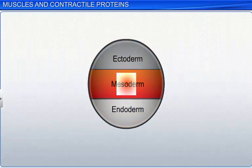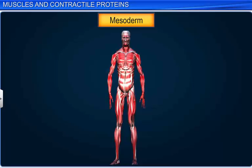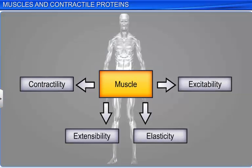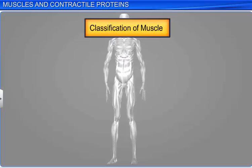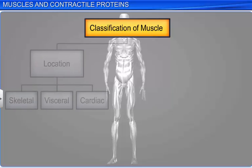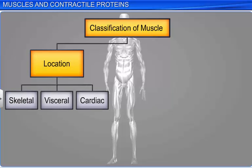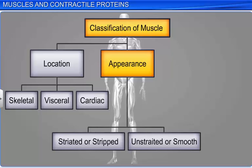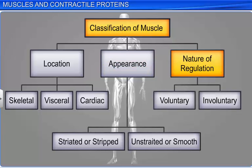Muscle is a specialized tissue that originates in the mesoderm. Interestingly, it is the only tissue in your body that has special properties like contractility, extensibility, elasticity, and excitability. Muscles can be classified based on their location, appearance, and nature of regulation of their activities.